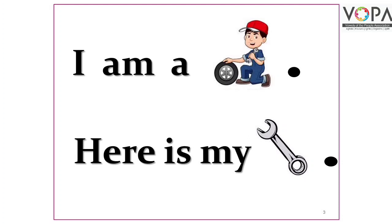बच्चों, आपने देखा होगा — यहाँ पर 'mechanic' वर्ड की बजाए mechanic की तस्वीर इस्तेमाल की गई है, और 'spanner' वर्ड की बजाए उसकी तस्वीर इस्तेमाल की गई है। तो आपको तस्वीर देखकर उस वर्ड को बोलना है। I am a mechanic. Here is my spanner.